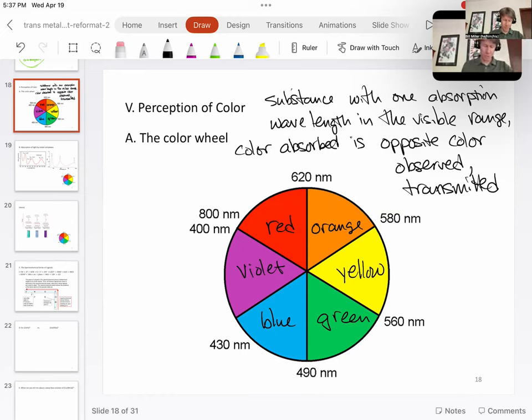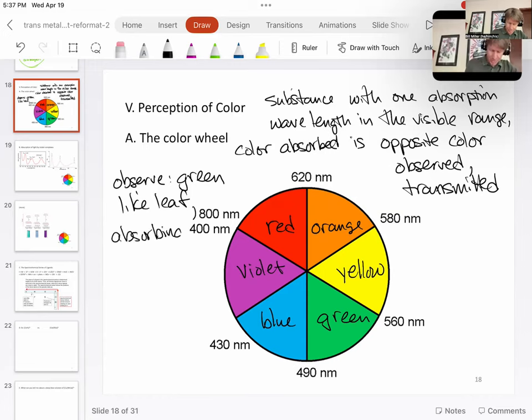So let's see what this means. If you observe something that is green, like a leaf, then it is absorbing red light. And this is a simplification of how a leaf works, but in general, one thing you can think of is if it's green, then it absorbs red.